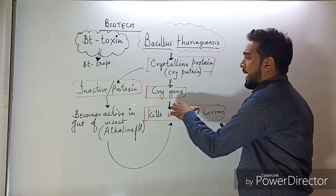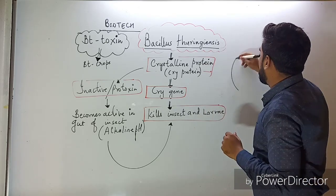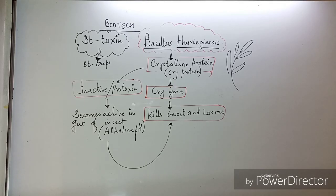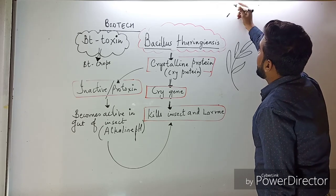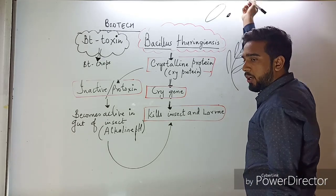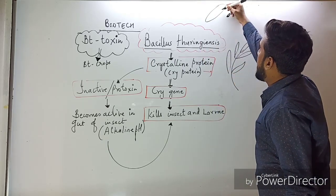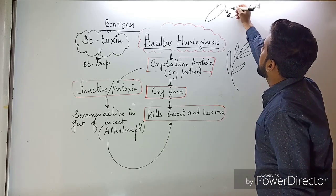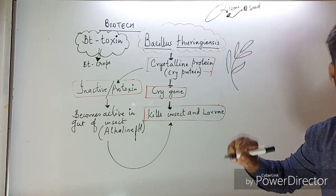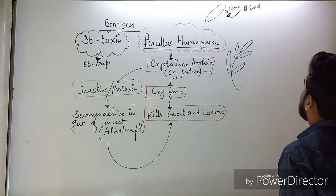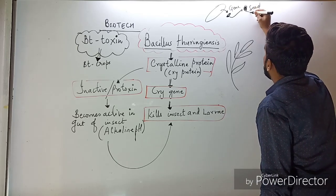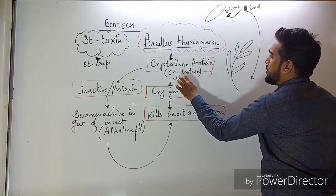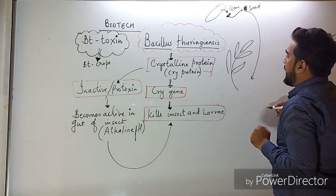To insert the cry gene from the bacteria into a plant, we take the particular gene from the bacteria's body and insert it into a seed. From this seed, a new plant is grown. The entire body of this plant will carry the cry gene, which produces cry protein.